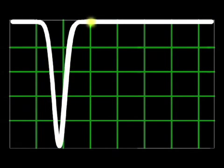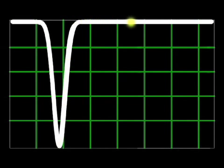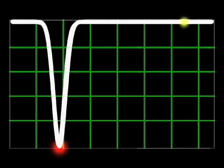In collecting our data, we sweep the strength of the horizontal magnetic field in time. At some point, it exactly cancels the Earth's magnetic field and we have no net magnetic field, which means no Zeeman splitting. Very few photons reach the detector. On our scope, this corresponds to the zero field dip.